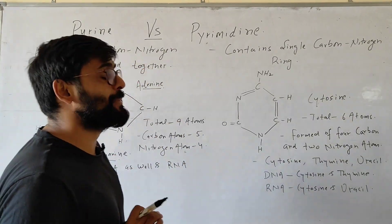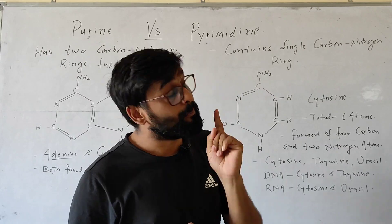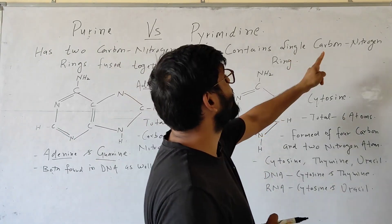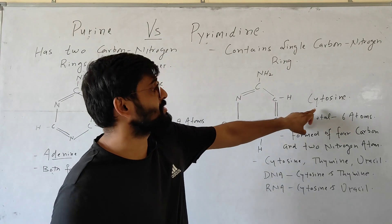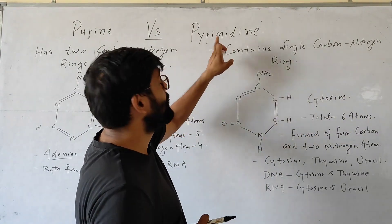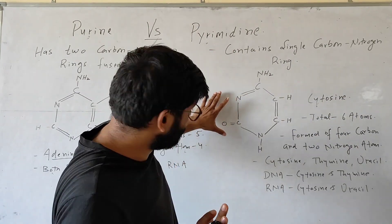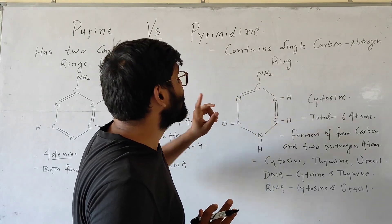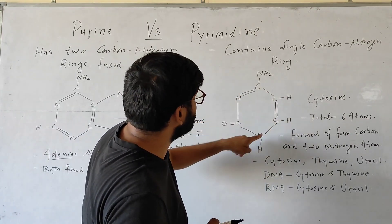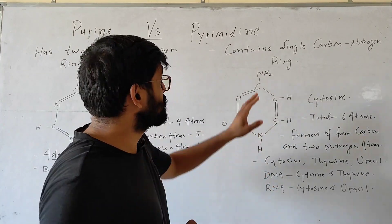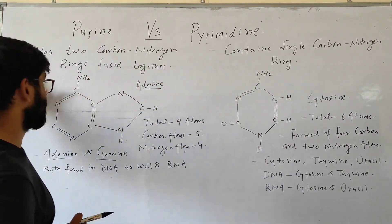In the case of Pyrimidine, Pyrimidine has a single ring. This ring also contains carbon and nitrogen. This is the structure of cytosine, which comes under Pyrimidine. You can see that in this ring, carbon and nitrogen are present. So Pyrimidine is a single-ring compound, while Purine is a double-ring compound.